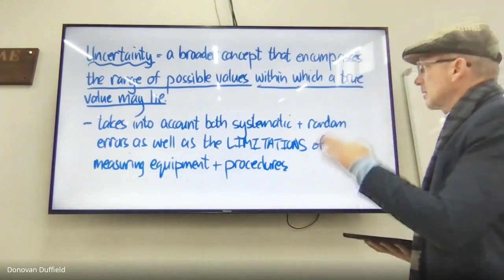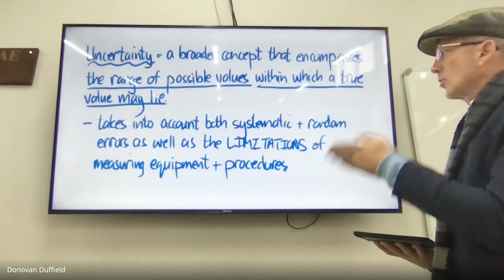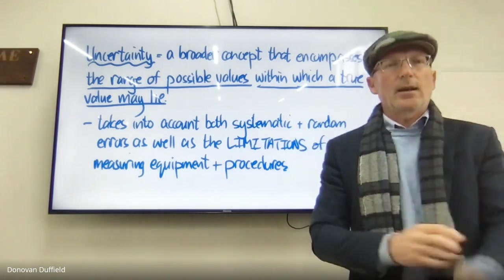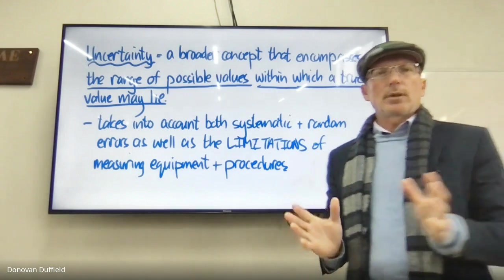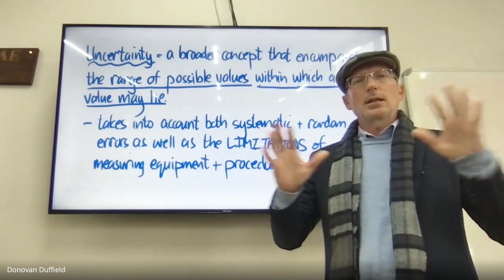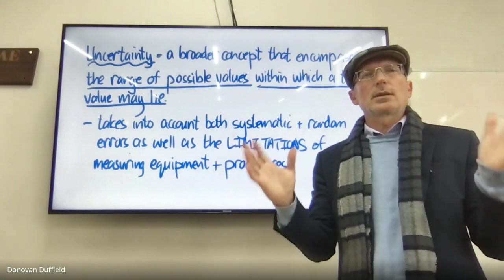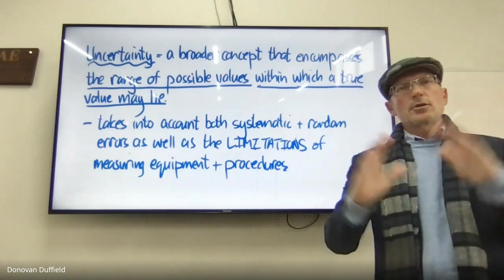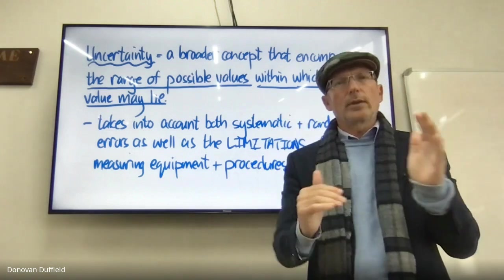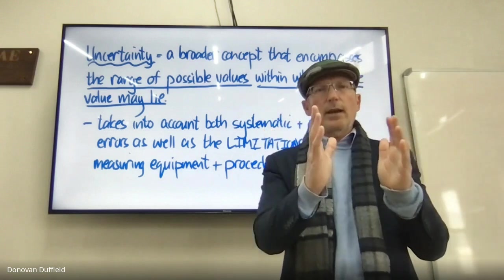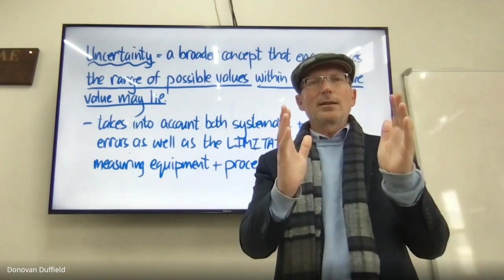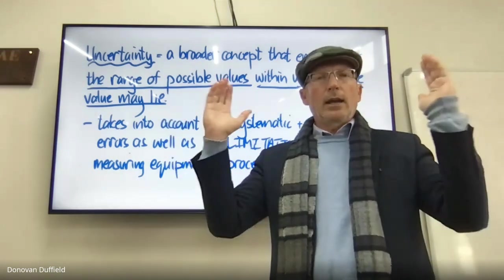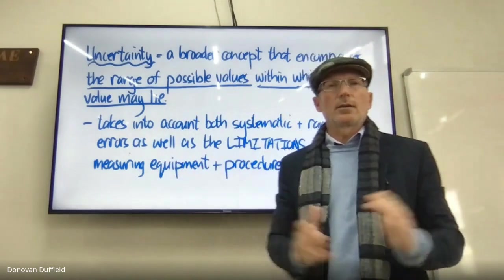Uncertainty covers all sources of error and says: our value is this, but it falls within an interval of uncertainties — positive and negative on both sides. It doesn't necessarily specify what those individual errors are, but accounts for all of them. The measured value sits in the middle of that uncertainty interval.